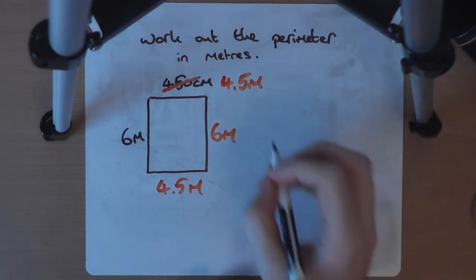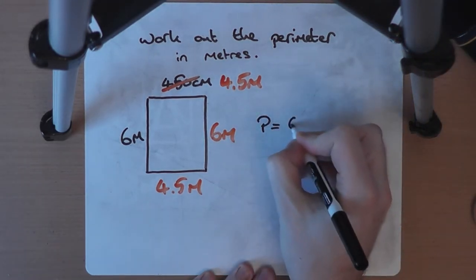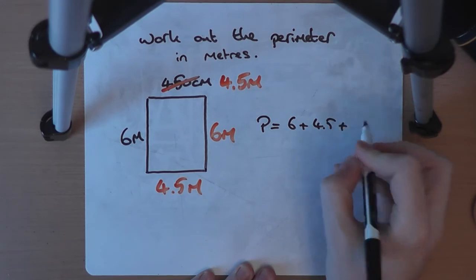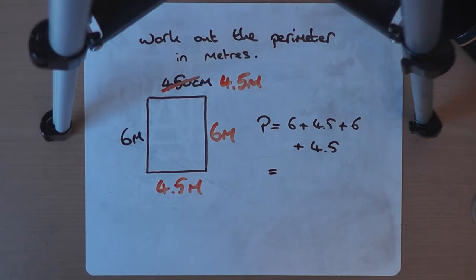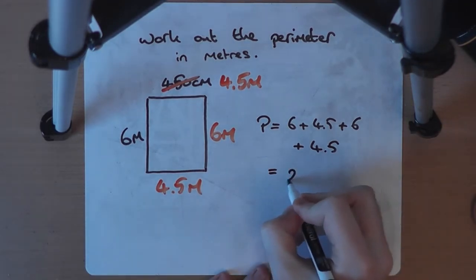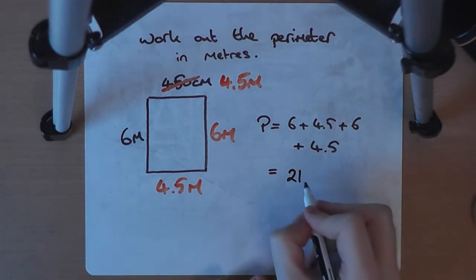So then the perimeter is the 6 plus the 4.5 plus the 6 plus the 4.5. Adding those together, well, 6 and 6 is 12. 4.5 and 4.5 is 9. 12 plus 9, 21. And what unit are we working in now? We're working in meters, so 21 meters. The question would have worked perfectly well if we'd been asked to work in centimeters instead. And we'd have got 2,100 centimeters for our answer instead. But this question wanted it in meters, so we put everything in meters first and then total them up for the perimeter.